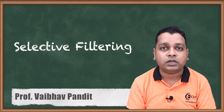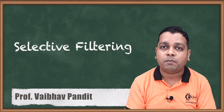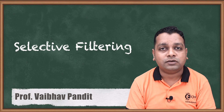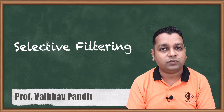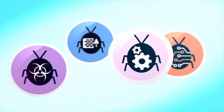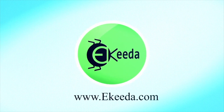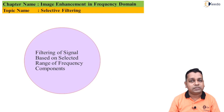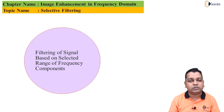In this video we carry forward the filtering process to make enhancements. This time we shall be having knowledge of how band pass, band stop, and band reject filtering work. These can be learned under the heading of selective filtering. A signal can be filtered by selecting specific frequency ranges — this is simply called selective filtering.